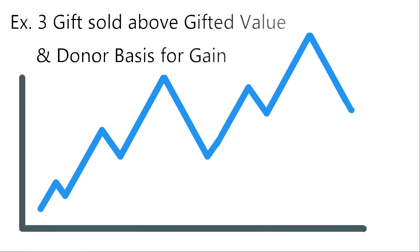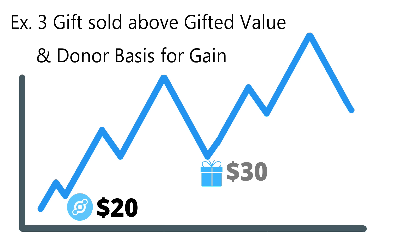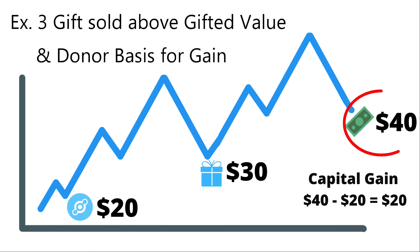Example 3: a gift was sold above the gifted value and the donor's basis value for a gain. If your gift has appreciated in value to above the donor's cost basis, you can use the donor's cost basis, resulting in a capital gain. In this case, Jason purchased one HNT for $20, gifted it to Austin at $30, and Austin sold at $40. Austin's capital gains in this scenario is $20.